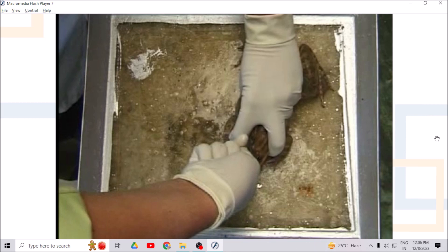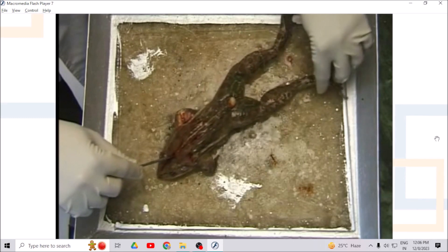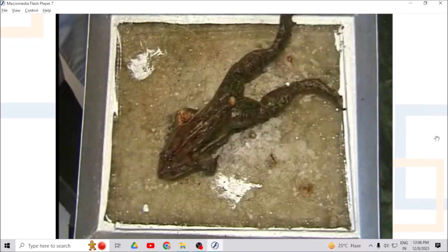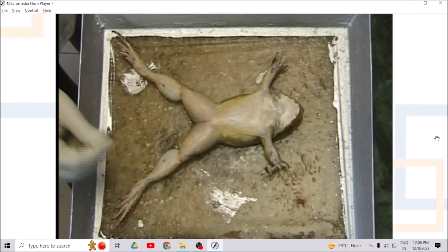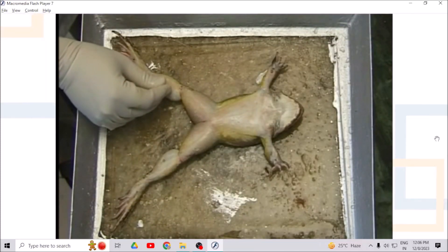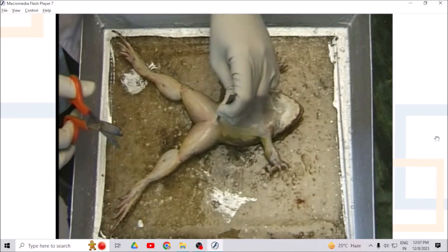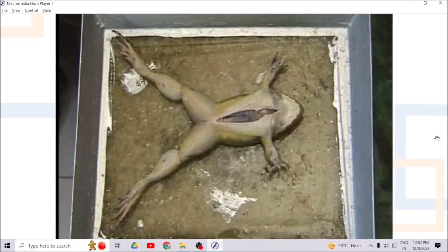Such a frog is used for experimental purpose as there is no sensation in it. Now, pin the limbs of the frog to dissecting tray. Remove the abdominal skin with a sharp scissor. Expose the abdominal muscle.